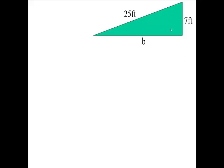Okay, we have a right triangle. The length of this side is 7, the hypotenuse is 25, and we do not know the length of this side.